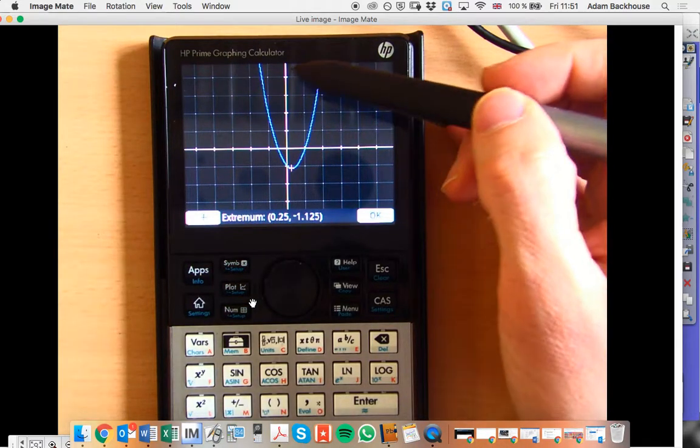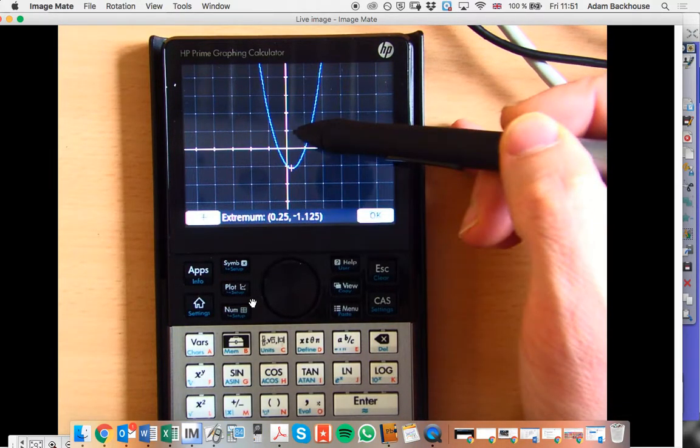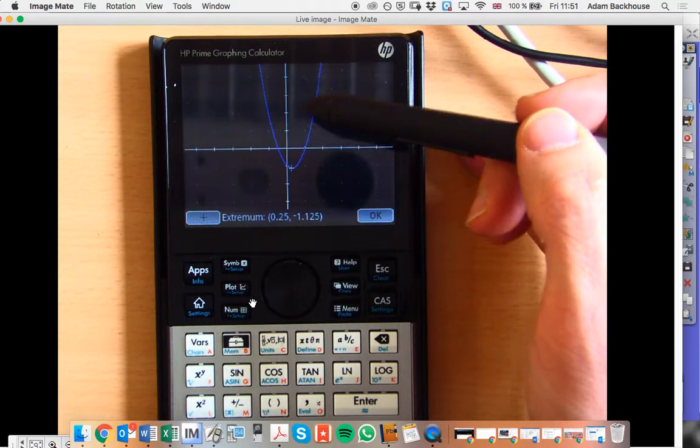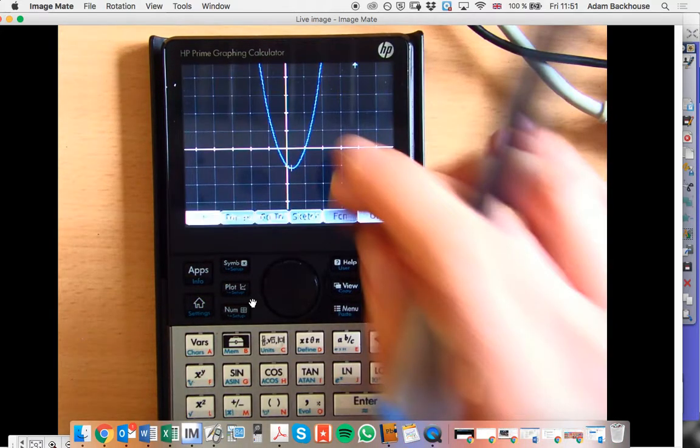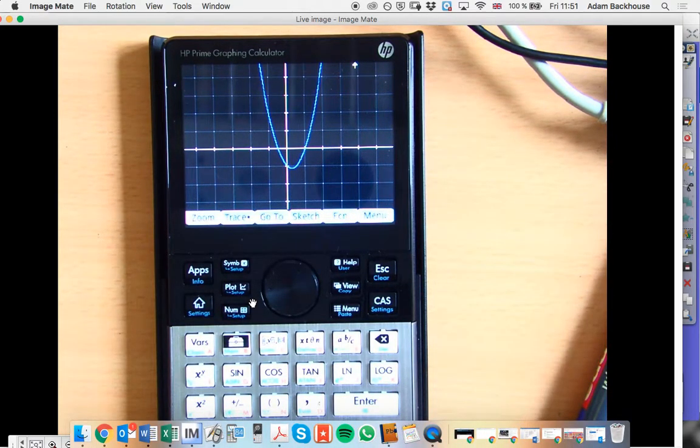The axis of symmetry is the vertical line that goes through here. As it's a vertical line, it has the form x equals a constant. And of course, it's passing through the x-coordinate of my vertex.